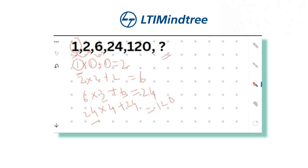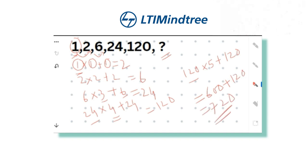Following the same pattern, the missing number is 120 multiplied by 5 plus 120. That is 600 plus 120, which equals 720. So the missing number is 720. If your answer is the same, please comment down and I'll give you a heart.